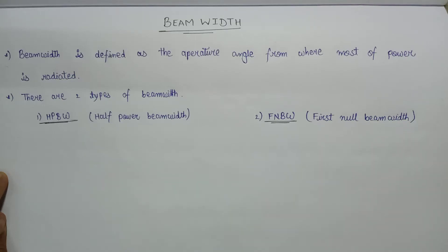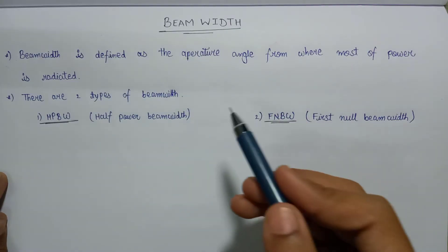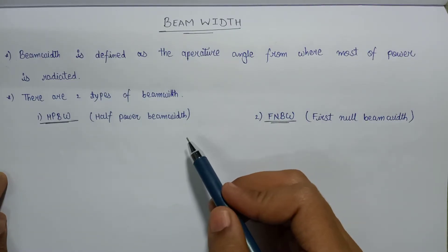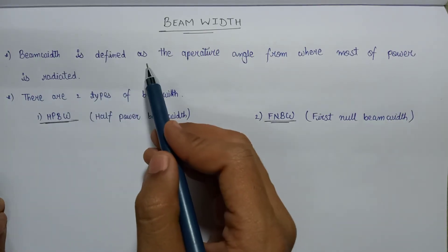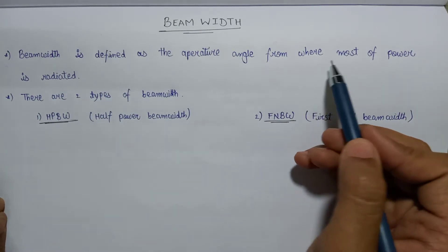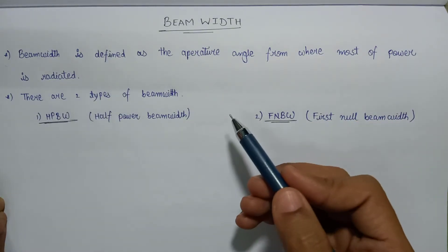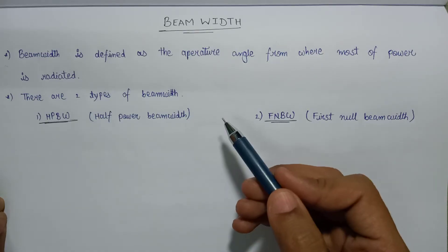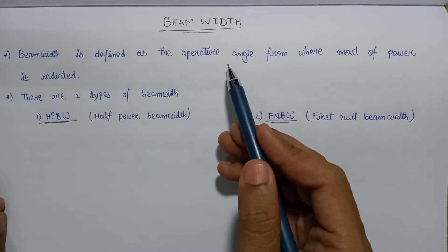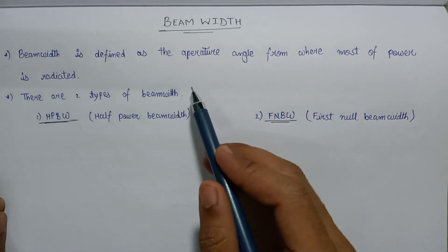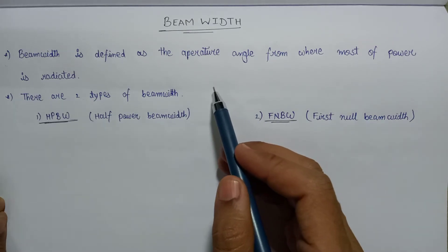In this lecture we are going to study about beam width, which is one of the most important parameters associated with antenna and wave propagation. Beam width is defined as the aperture angle from where most of the power is being radiated. Since the antenna will radiate only in the direction of maximum directivity, beam width and directivity are somehow connected with each other.